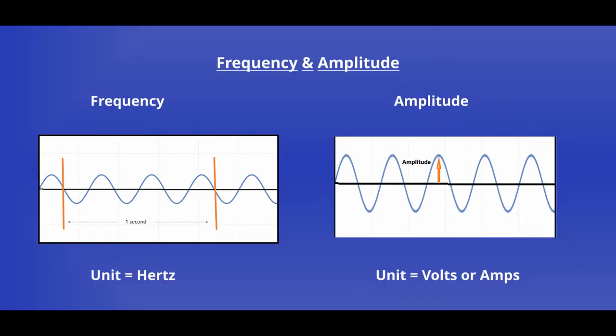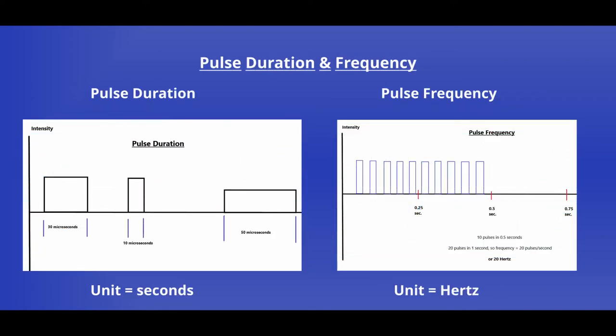Two of our more commonly adjusted parameters include frequency and amplitude. Frequency refers to the number of waves or the number of pulses in a second. Amplitude is defined as the height of the wave or the pulse. Amplitude is a direct reflection of the intensity of our e-STEM. For those instances when we choose a pulsed waveform over a continuous, we'll need to determine our pulse duration. The longer the pulse, the more current it carries.